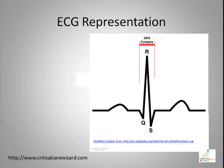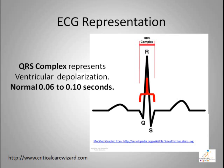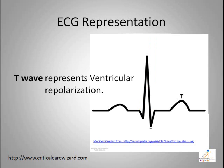Ideally, after the atrial muscles have been depolarized, the ventricles are depolarized next, thus creating a QRS waveform, referred to as QRS duration or QRS complex. When the ventricle muscles return to their resting state, a T-wave is created.